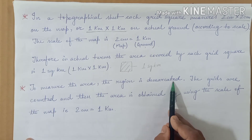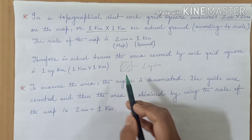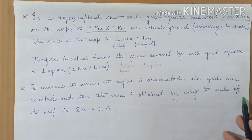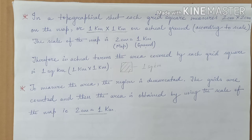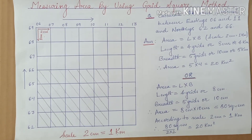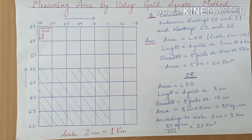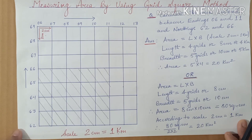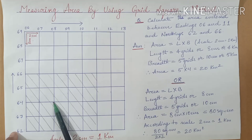To measure the area, the region is demarcated first. Then the number of grid squares is counted, and the area is obtained by using the scale of the map — that is, 2 centimeters to 1 kilometer. We come back to the marked area; since each grid square has an area of 1 square kilometer, we will multiply the number of grid squares to get the answer.